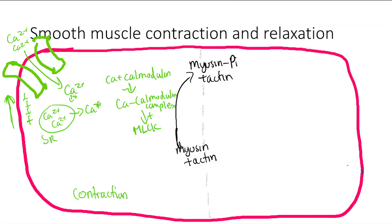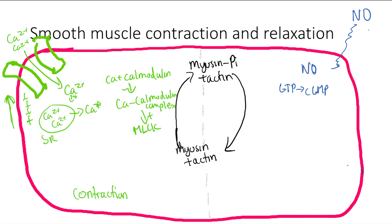If we want to relax the smooth muscle, we need to remove that phosphate. What we need is nitric oxide, which is made by endothelial cells. Nitric oxide is outside the cell and diffuses into the membrane. Nitric oxide causes GTP to be converted into cyclic GMP, which activates myosin light chain phosphatase. Phosphatase removes phosphates, so it removes the phosphate from myosin, leaving actin and myosin dissociated and giving muscle relaxation.